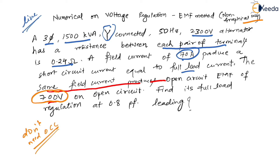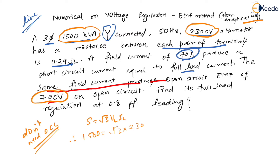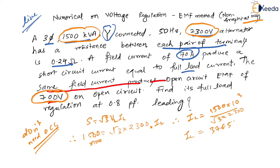Now, 1500 kVA is given, and the voltage is 2300 volts. To find the rated current, we use S = √3 × VL × IL. So 1500 × 10³ = √3 × 2300 × IL. Solving this gives IL = 1500 × 10³ divided by (√3 × 2300), which equals 376.5 amperes.